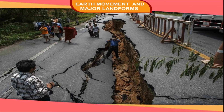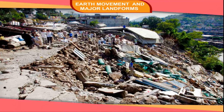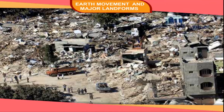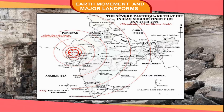Earthquake at Bhuj — A Case Study. A powerful earthquake, measuring about 7 on the Richter scale, hit the Indian state of Gujarat on 26 January 2001. It caused great damage to life and property, killing more than 20,000 people and destroying nearly 4 lakh houses. About 16 million people were directly or indirectly affected. The earthquake had its epicenter near Bhuj in Kach.